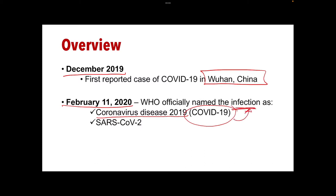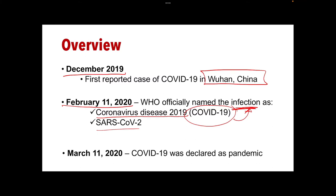That name refers to the infection itself, while the virus was named SARS-CoV-2. On March 11, 2020, COVID-19 was declared a pandemic. In the Philippines, Presidential Proclamation No. 922 Series of 2020 was issued, declaring a state of public health emergency, and the alert system was raised to Code Red Sub-Level 2 in accordance with the Department of Health and the IATF.